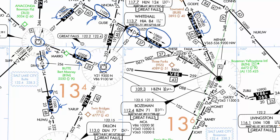The MOCA provides the same obstacle clearance as an MEA — 1,000 feet over flat terrain and 2,000 feet in designated mountainous areas — however it does not guarantee navigational signal coverage between the two fixes. The MOCA only guarantees navigational coverage within 22 nautical miles of the nearest navigational aid for the route. So on Victor 365, the nearest navaid is the Bozeman VOR; 9,400 feet guarantees obstacle clearance between Bozeman VOR and SWED, but not Bozeman VOR reception beyond 22 nautical miles from the VOR.